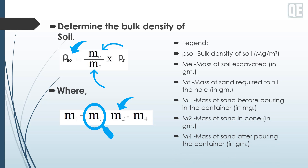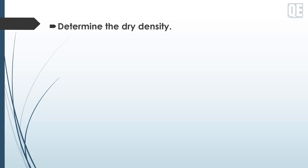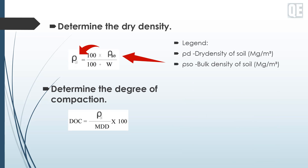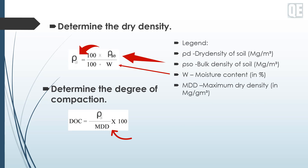Determine the dry density: ρd = 100 × ρso / (100 + w). Then determine the degree of compaction (DOC): DOC = (ρd / MDD) × 100. Here, ρd means dry density of soil, ρso means bulk density of soil, w means moisture content, MDD is maximum dry density, and DOC is degree of compaction.